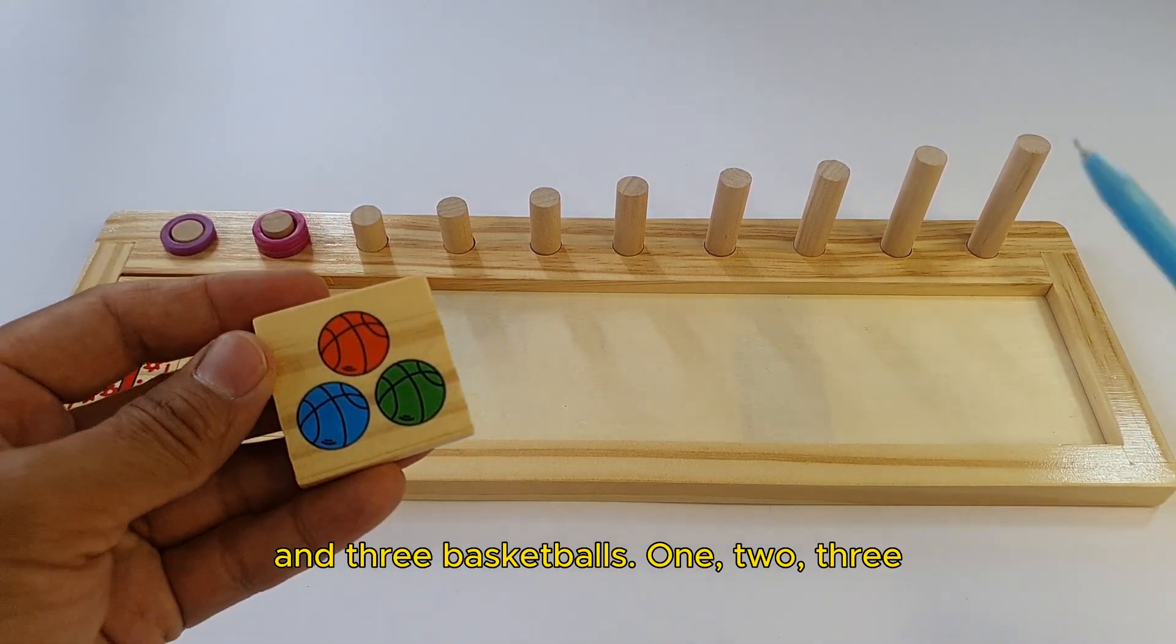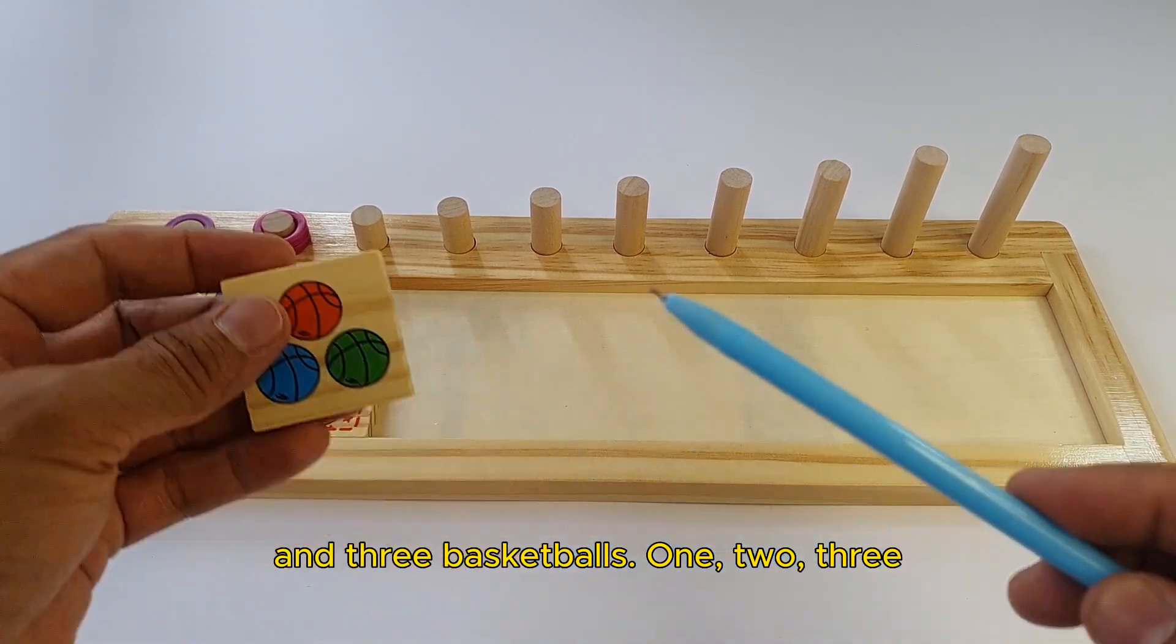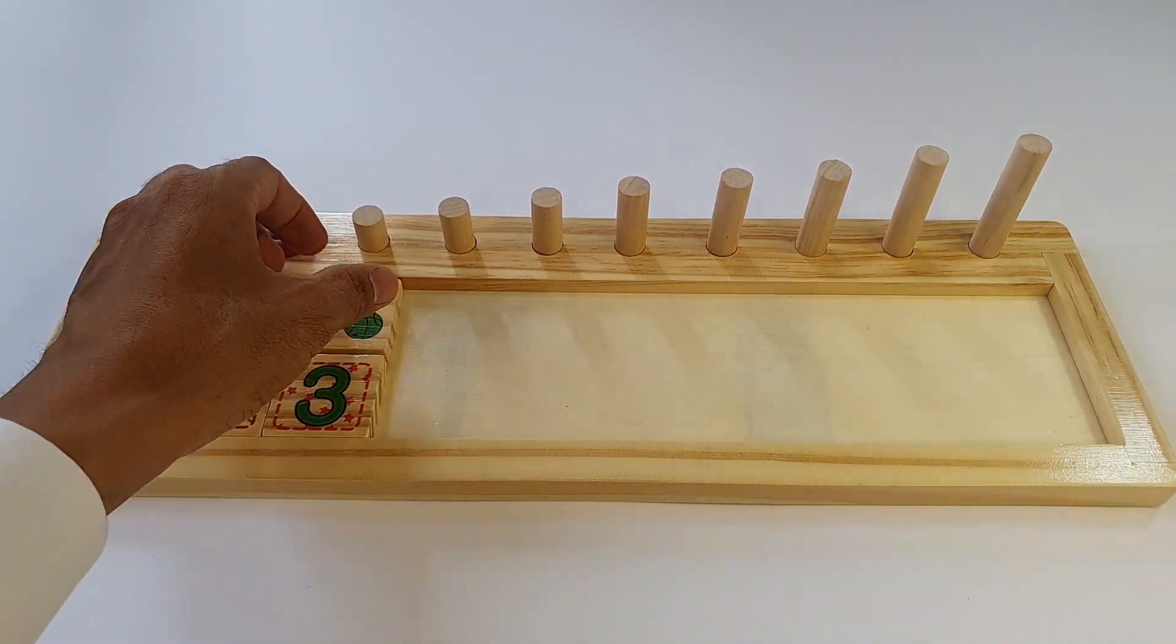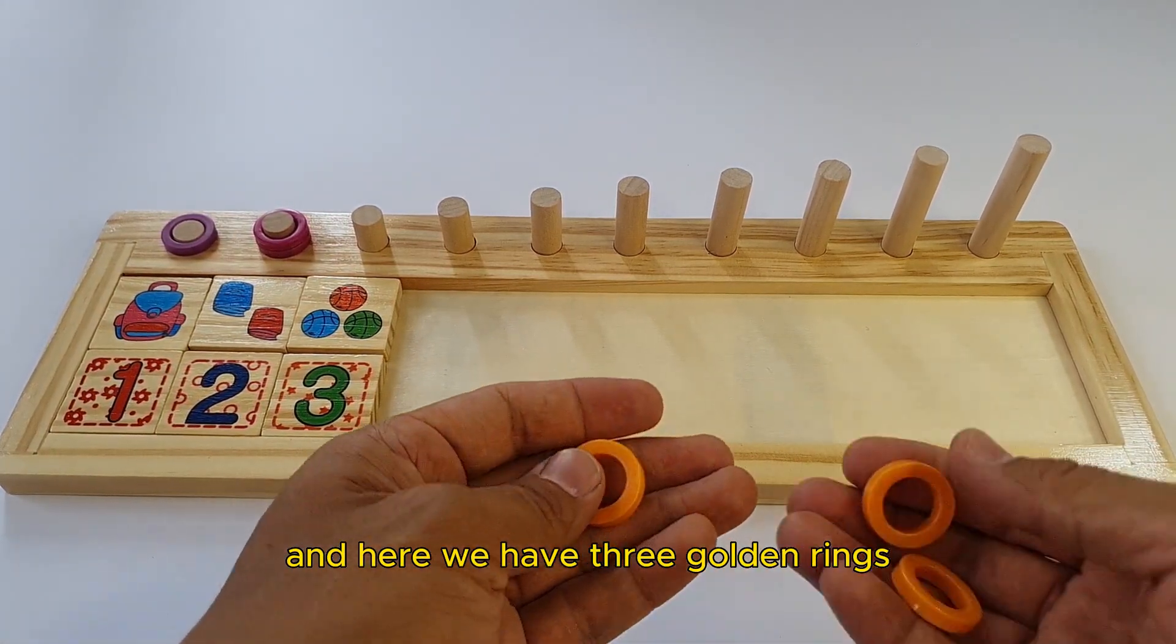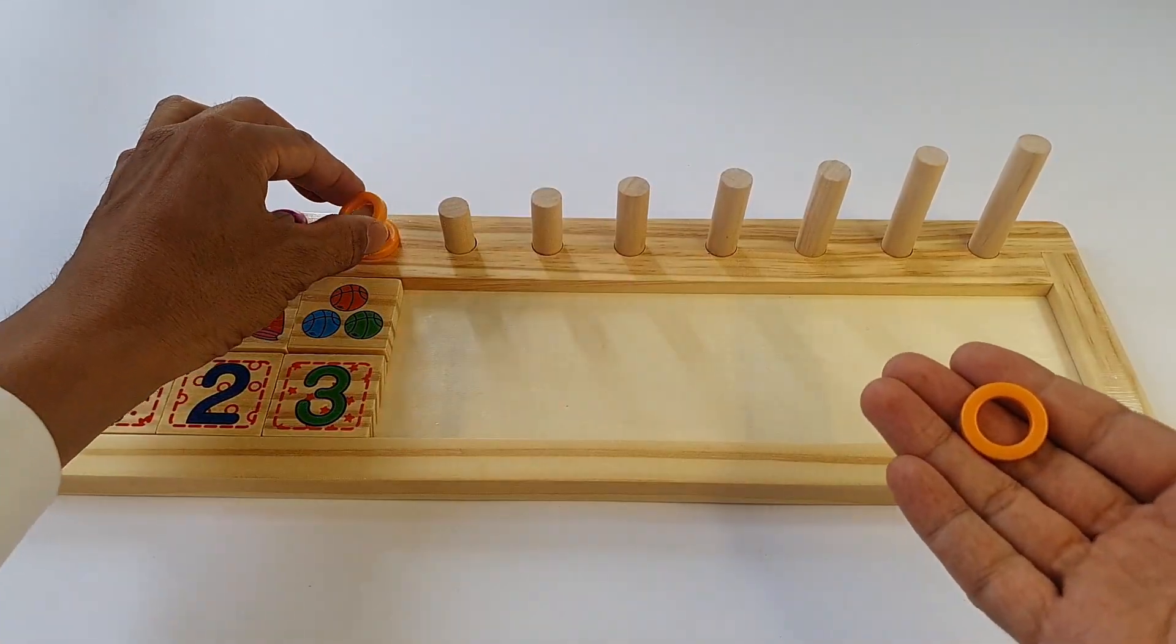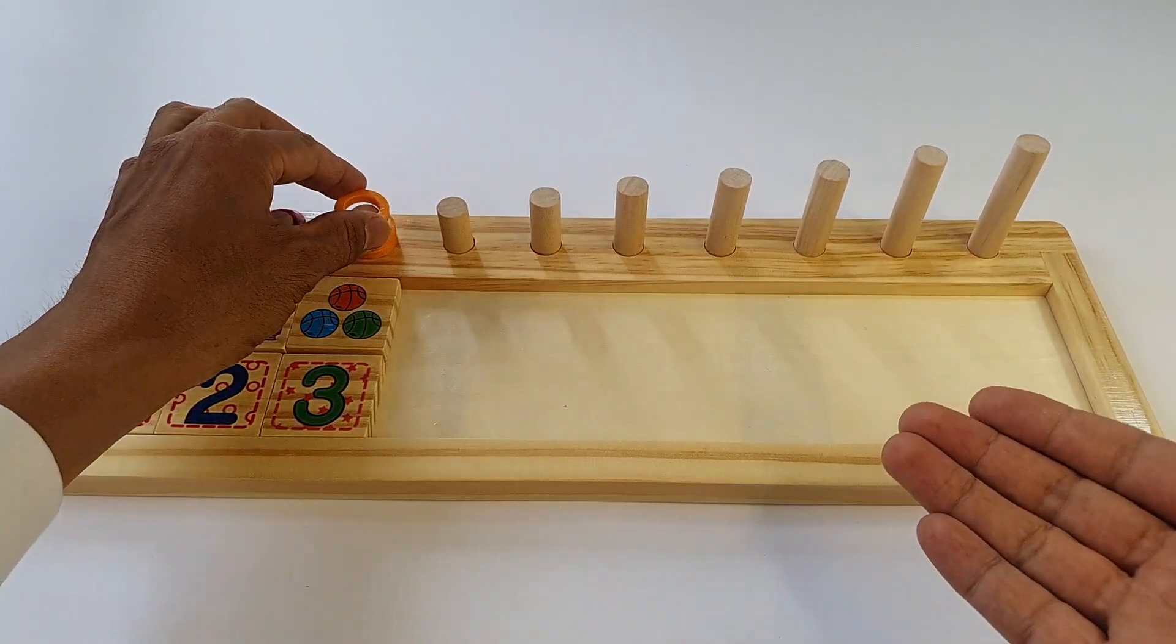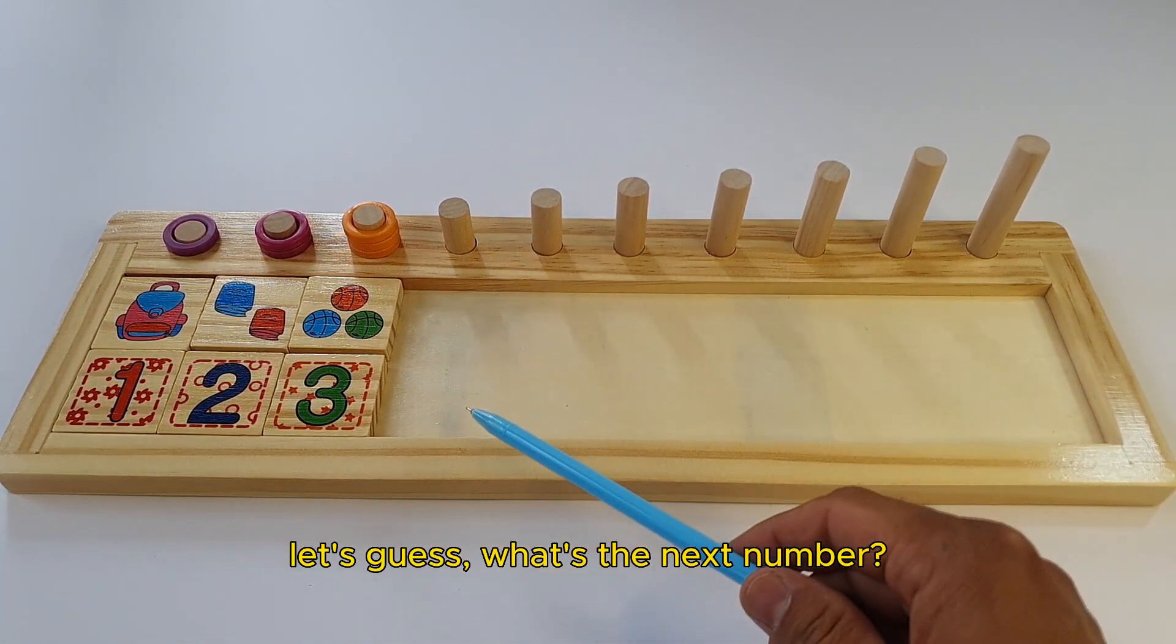And three basketballs. One, two, three. And here we have three golden rings. One, two, three. One, two, three. Let's guess what's the next number?